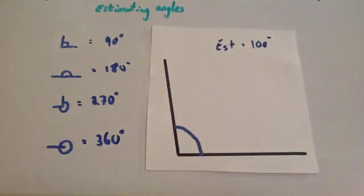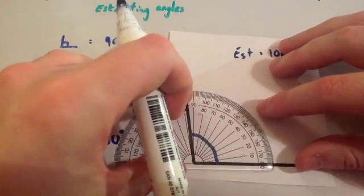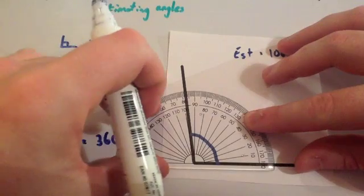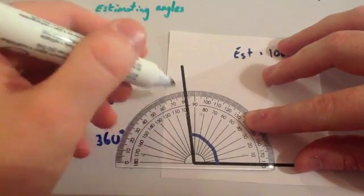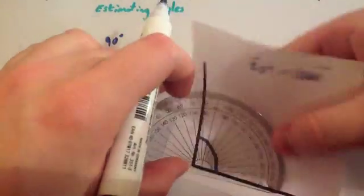Let's have a measure and see what size it actually is. Let's see, that looks pretty good. So it looks just under 100 degrees. So that's a pretty good estimate. So let's have a look at another one.